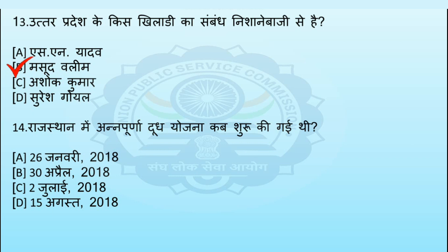अगला प्रश्न: Rajasthan में अन्नपूर्णा दूध योजना कब शुरू की गई थी? Option A: 26 जनवरी 2018, Option B: 30 अप्रैल 2018, Option C: 2 जुलाई 2018, Option D: 15 अगस्त 2018। इस प्रश्न का सही उत्तर Option C – 2 जुलाई 2018 है।